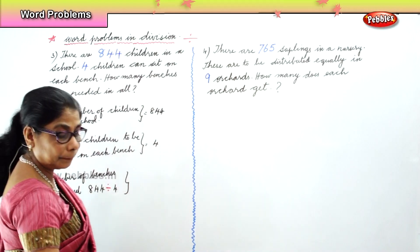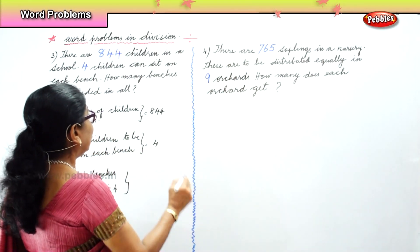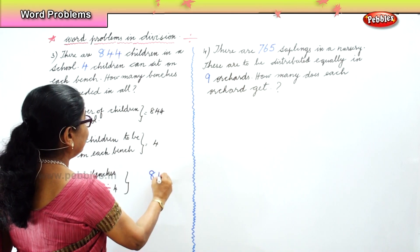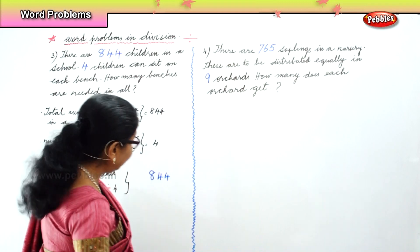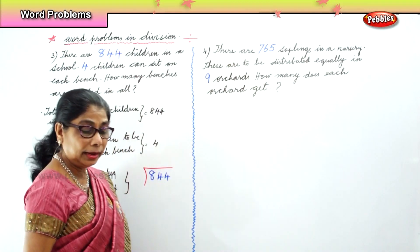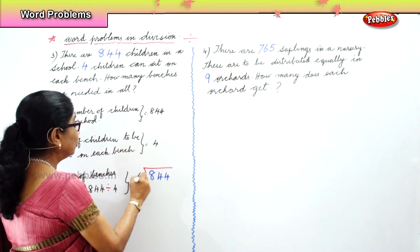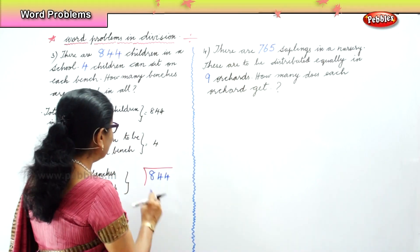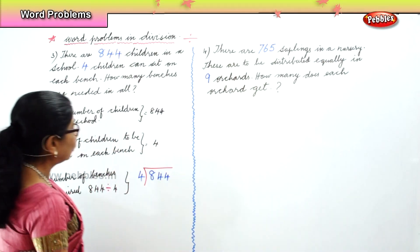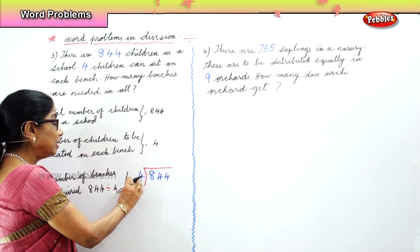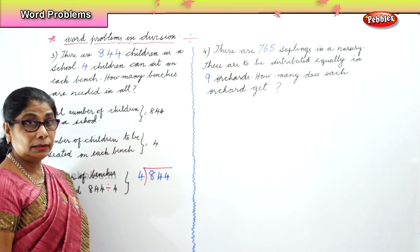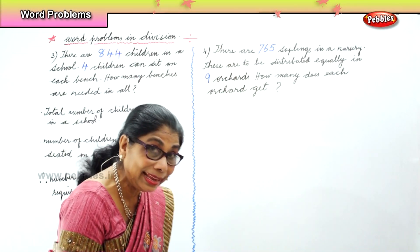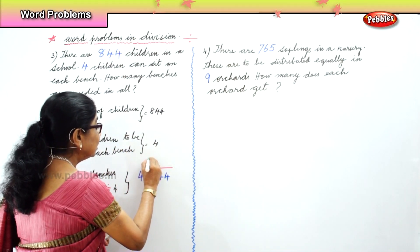Now we will work out our sum. Eight hundred and forty-four is the number of children and we are going to divide 844 by four, because four members can sit on one bench. Let's do the long division to find out the required number of benches. First, the divisor is four. The dividend is 844. Four goes into eight two times.